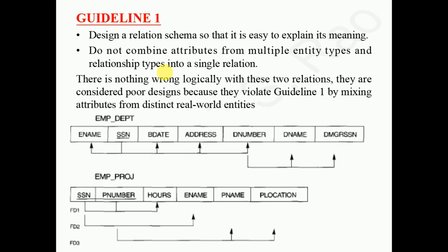If we try to combine attributes from multiple entities, we end up with a poor design. This gives rise to different types of anomalies — insertion anomaly, deletion anomaly, and update anomalies. In a given relation there is nothing wrong logically, but we call this a poor design.